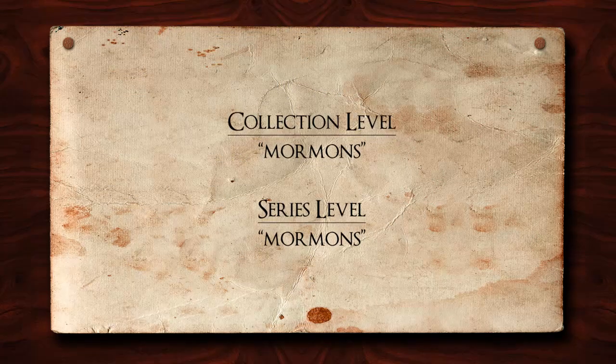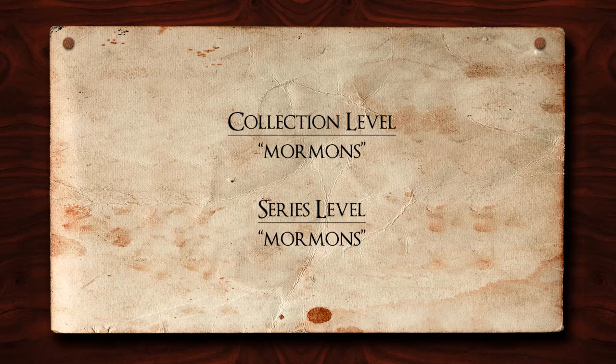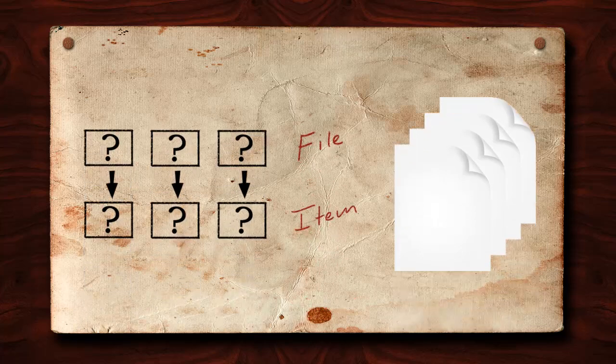For example, if you assign a subject access point of Mormons at the collection level, it will also be assumed to be the subject of the series within the collection unless another term is entered. At the file or item level, the only access points required are for documentary forms. Again, it is important to remember inheritance, especially if the containing level has multiple documentary form access points.